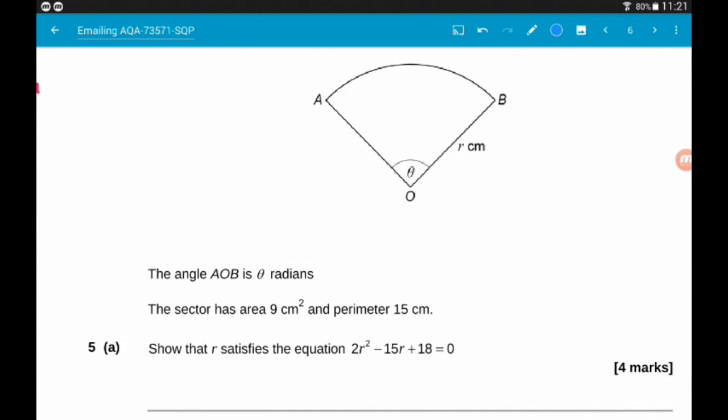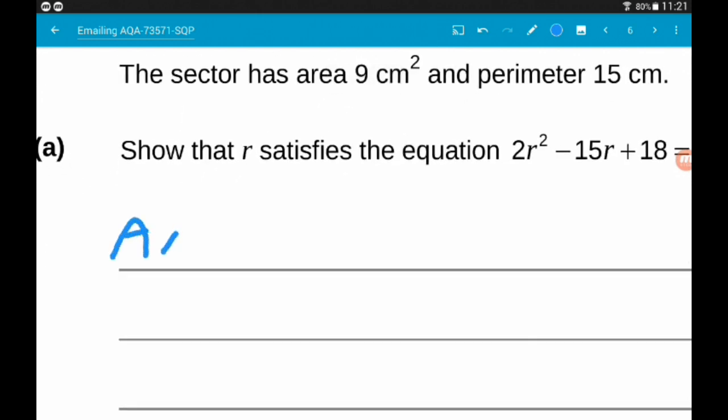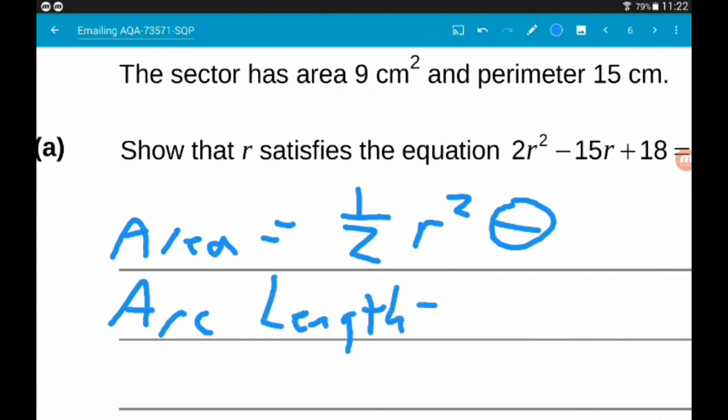That's going to allow us to form two equations. Area of a sector is ½R²θ. The other formula that we're going to need is arc length. Arc length is the radius times the angle, so Rθ.